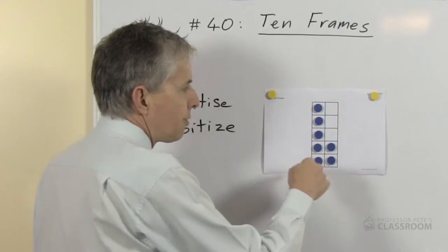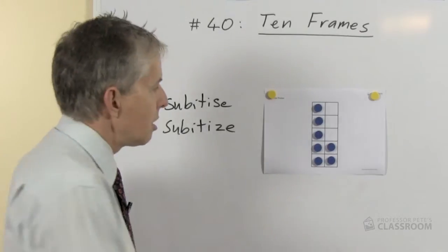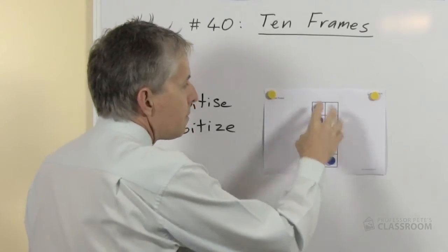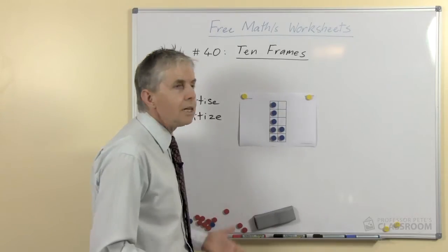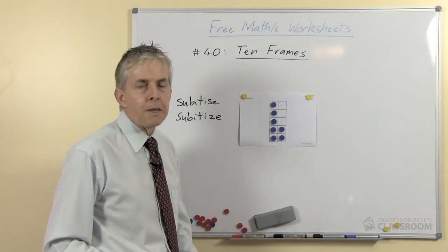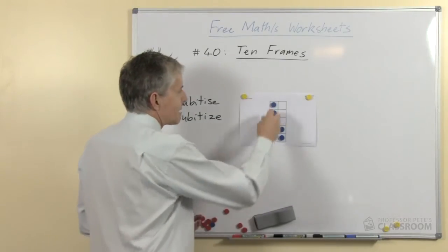The other arrangement I recommend is to fill one line of five first and then the other two, so the others I should say. So that would be an alternative arrangement for seven and again you can easily see it's seven, providing you know that five and two makes seven.